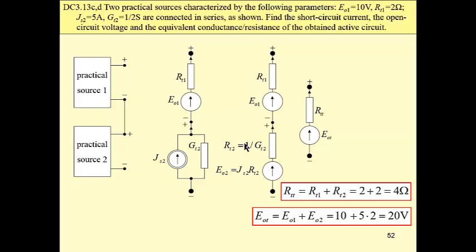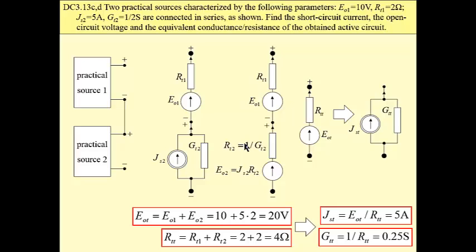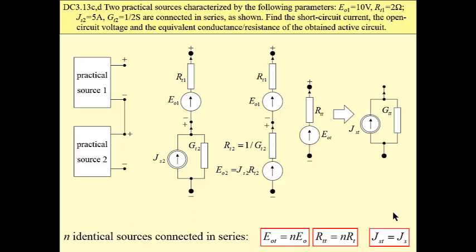If we want to find the Norton equivalent, we have to transform this Thevenin into Norton to obtain these values. In general, if we have N identical sources connected in series, then the open-circuit voltage of the combination is N times greater than the open-circuit voltage of a single source. The total resistance of the combination is N times greater than the resistance of a single source, and the short-circuit current is exactly the same as the short-circuit current of a single source.